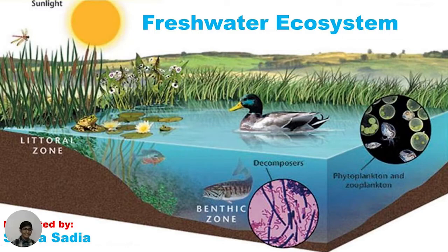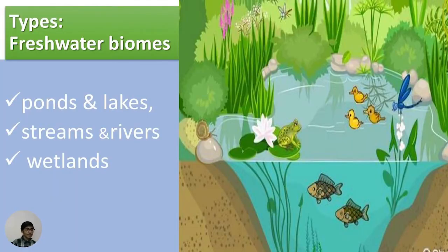Hi everybody, this is Ala Saadia. As you know, I have started a series about ecosystems. Today is the fourth episode, and the topic is the freshwater ecosystem. Types of freshwater biomes: ponds, lakes, streams, rivers, and wetlands are all examples of freshwater biomes.